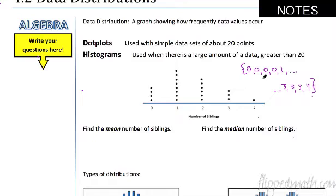Now that you know how to do that, pause the video. I want you to find the mean number of siblings from the dot plot and the median number of siblings. Pause the video and go ahead and do it.